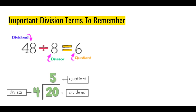Another way we can write division problems is using the half box method. The divisor is on the outside to the left, the dividend is on the inside below, and the quotient is on top. These mean the same things but look different — in one the dividend comes first, and in the other the divisor comes first. So it's important not to confuse how these are written.